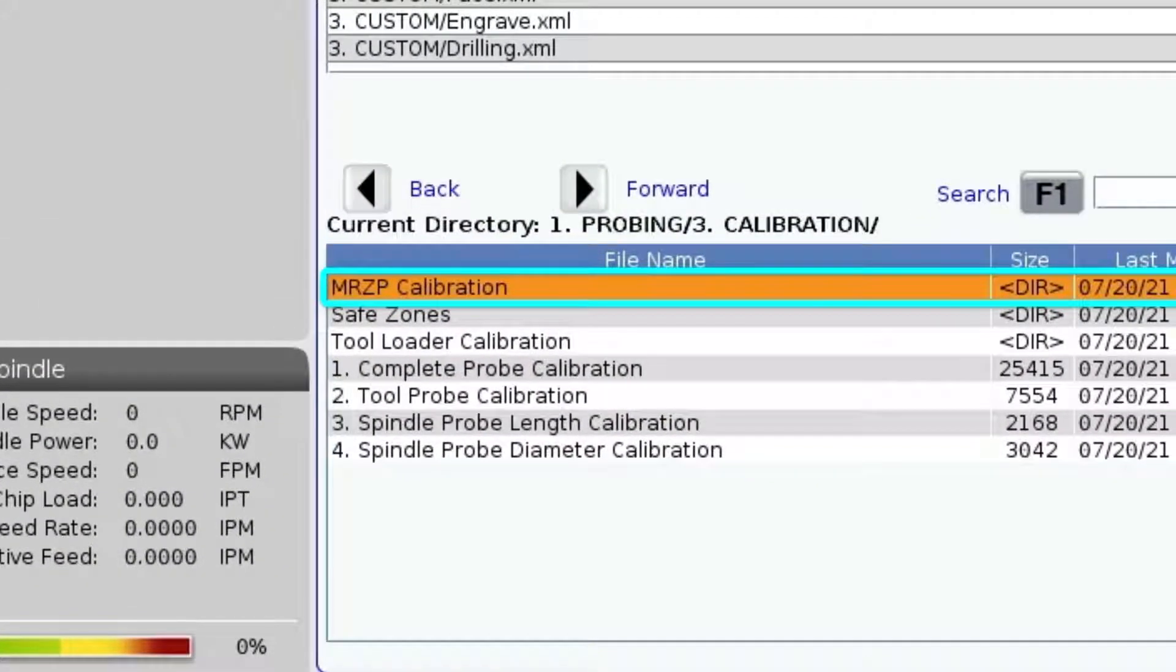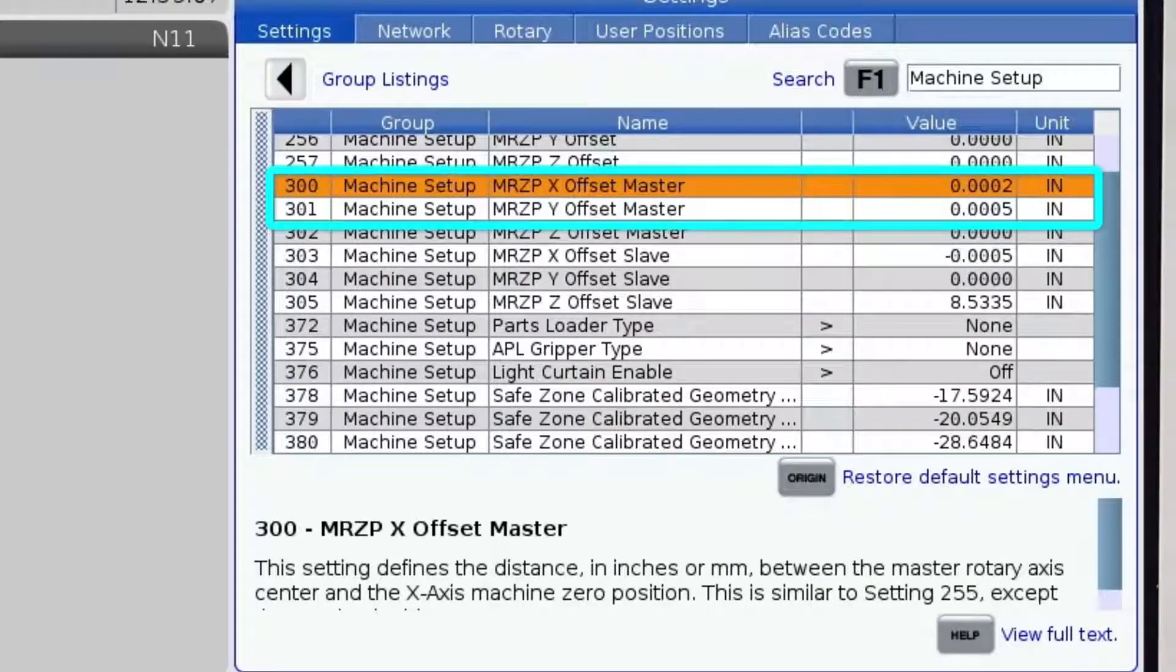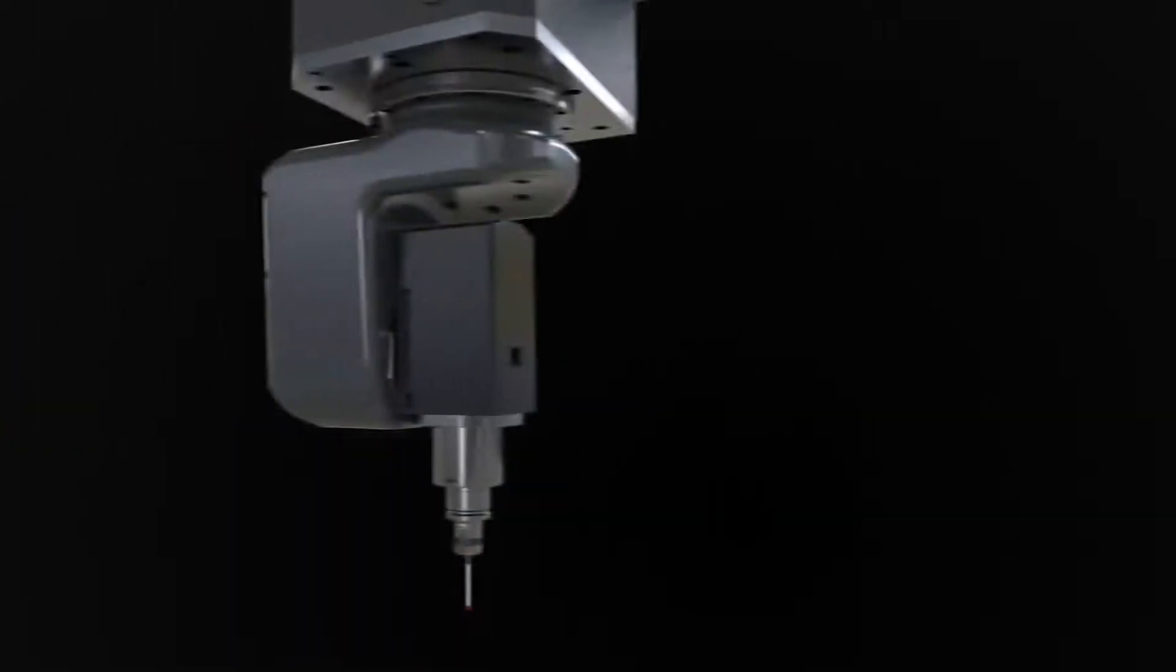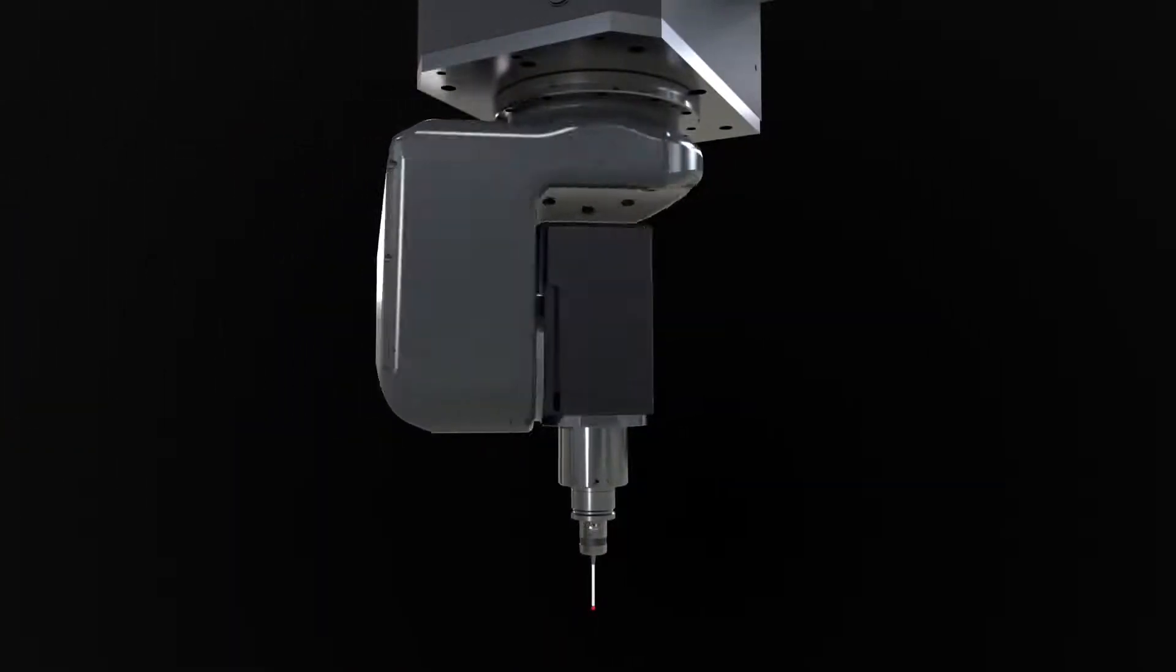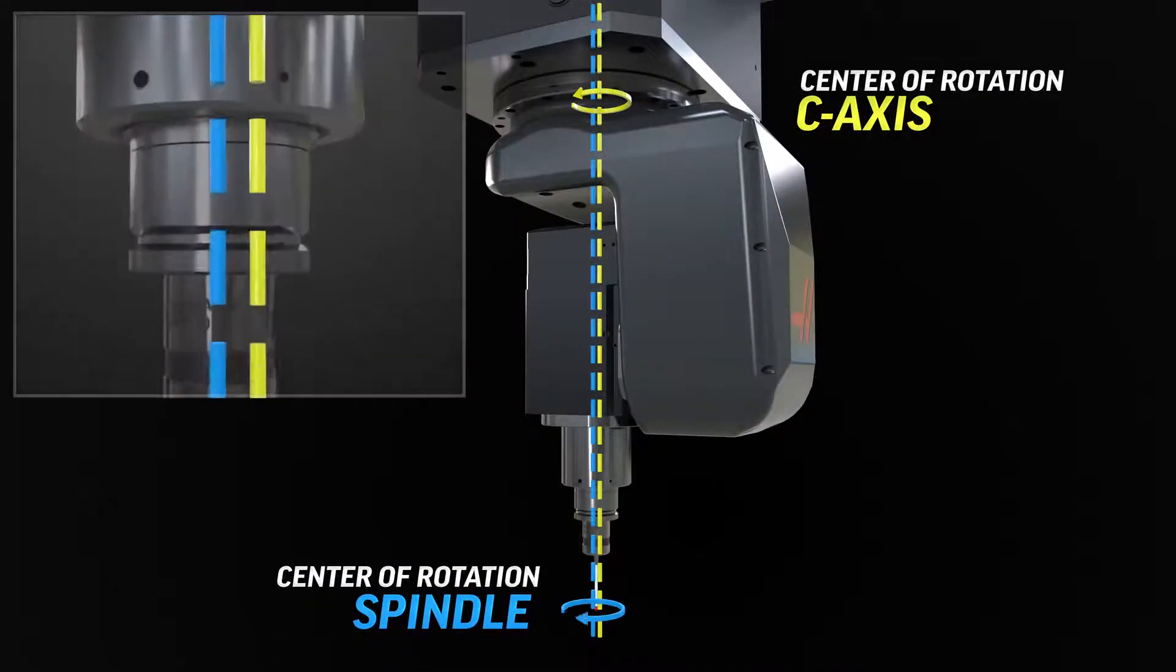The MRZP template needs to be run first and the process will set the MRZP settings 300 and 301, which are the MRZP X and Y offset master settings. These settings account for any deviation between the center of the C axis rotary and the center of spindle rotation.